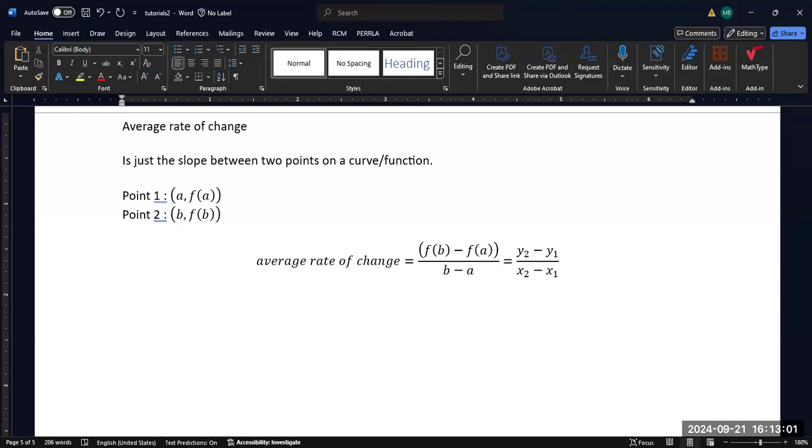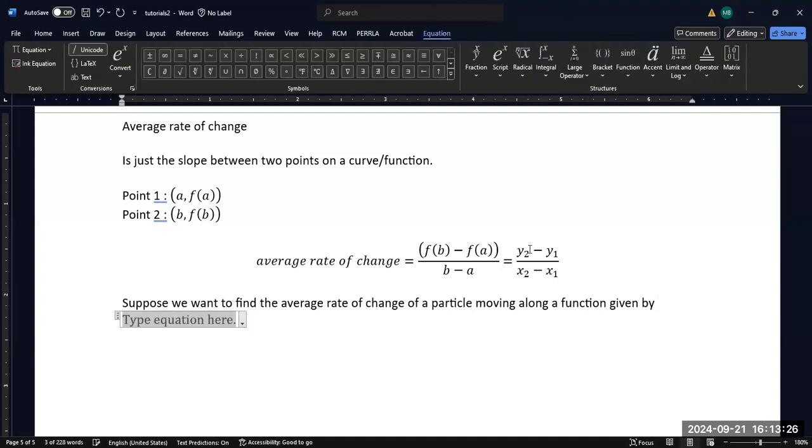But this is literally all it is. So let's look at a specific example. Suppose we want to find the average rate of change of a particle moving along a function given by f(t) equals -16t² plus 3t plus 11.